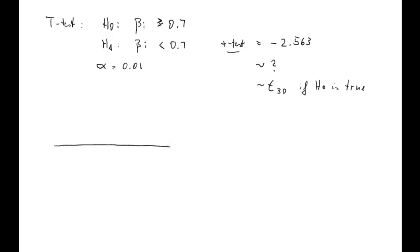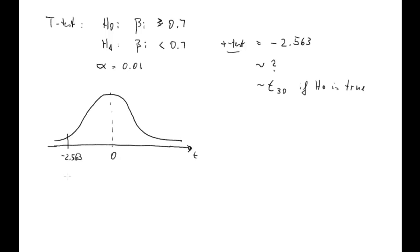Let's sketch a t-distribution. It's pretty similar to a normal distribution — we know that with large degrees of freedom they converge. The t-distribution is centered around zero. Our test statistic of negative 2.563 sits out here in the left tail. The p-value graphically is the probability underneath the distribution to the left of our test statistic — it's to the left because we have a left-sided alternative hypothesis.